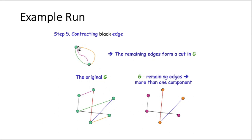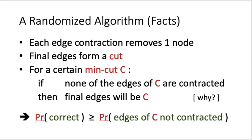It is fairly easy to see why this is true. After the removal of these edges, this node — which may represent some contracted and merged nodes — and this other node, which represents other merged nodes, form two groups. These two groups of nodes in the original graph will be disconnected after the removal of the three edges. The final edges output will always form a cut.